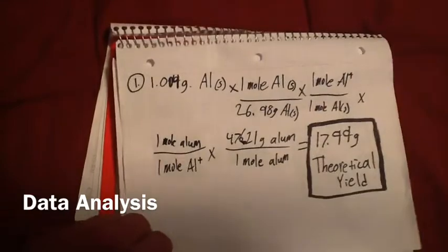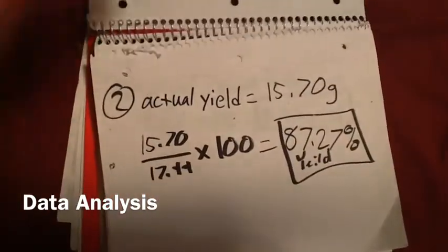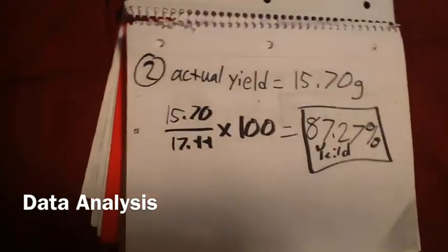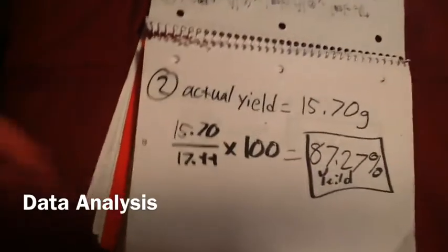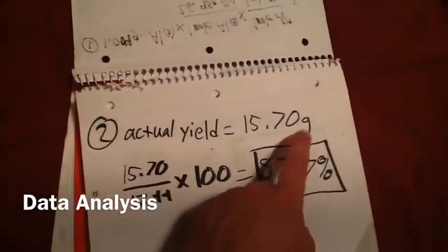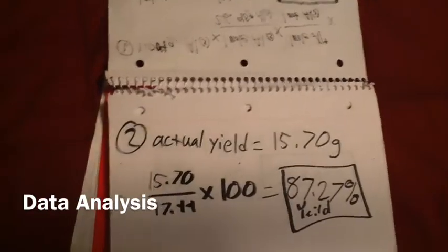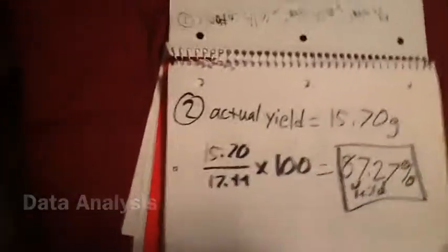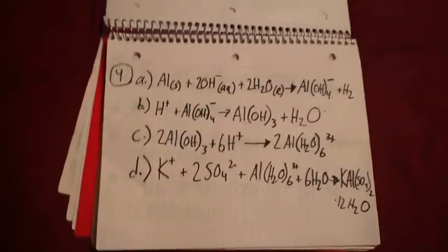Number two, actual yield. Our actual yield turned out to be 15.70 grams, and we need to find out our percent yield.